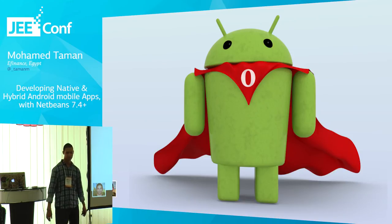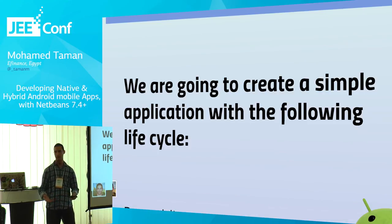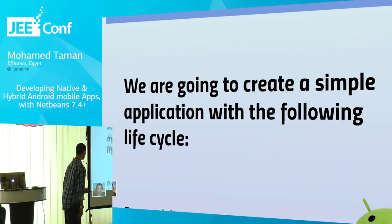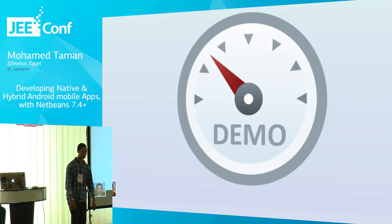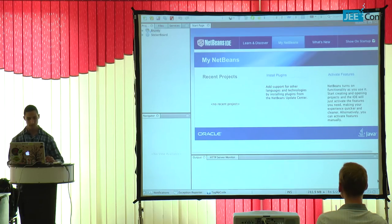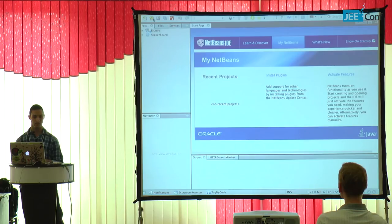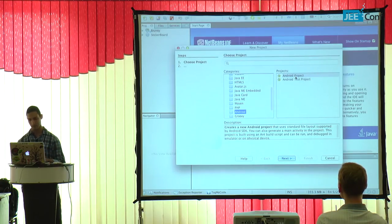Now let's do the coding. We're going to create a simple native Android application, do some editing, and run it on the emulator. With the NB Android plugin installed, you'll find a new category under Java development called Android. You can choose your Android project type and add additional projects for your Android application, including JUnit-based unit testing.